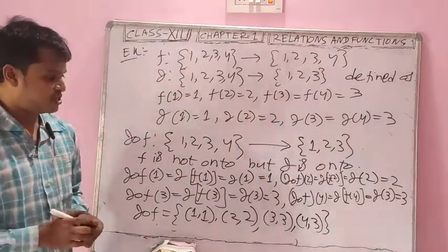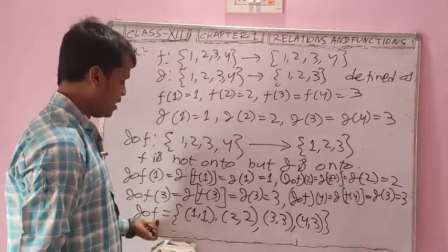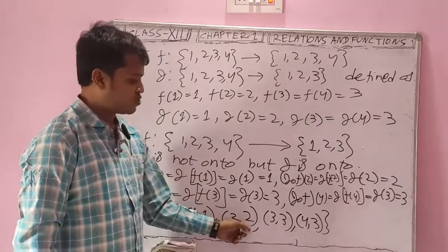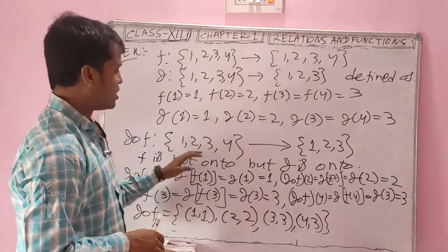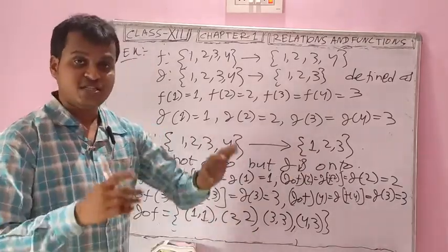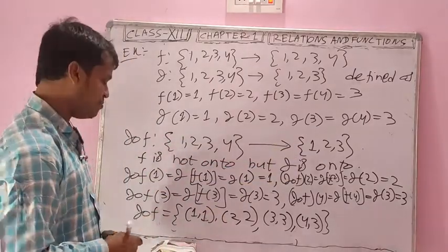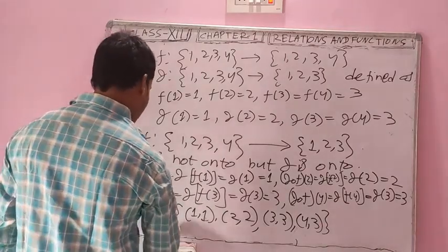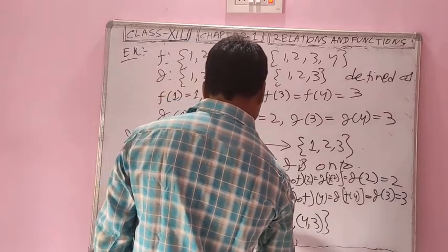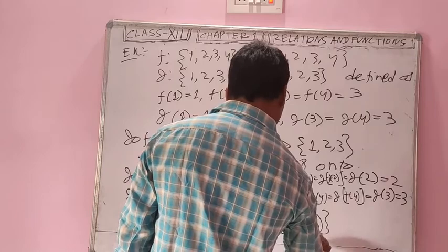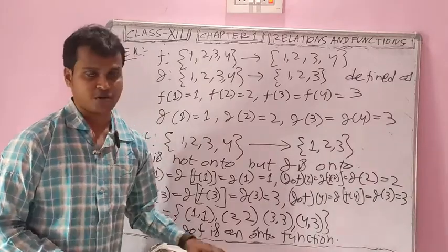Check if G∘F is onto: the range of G∘F is {1, 2, 3}, and the codomain is {1, 2, 3}. Since range equals codomain, G∘F is an onto function. So we have shown: G∘F is onto, G is onto, but F is not onto.